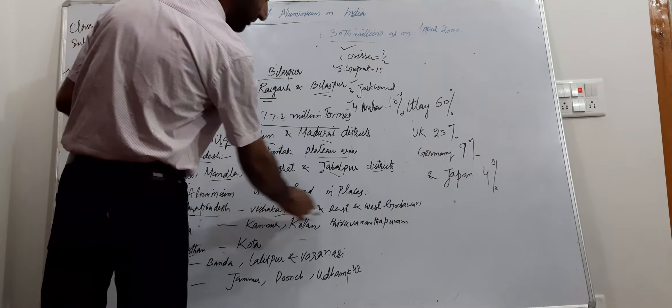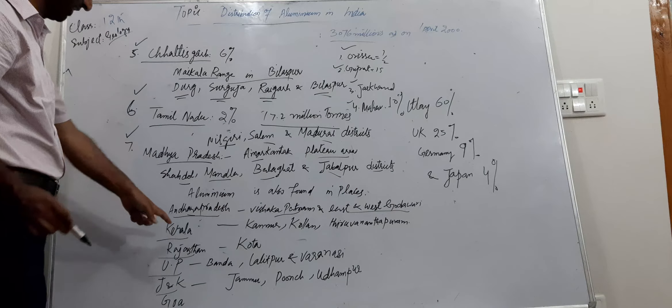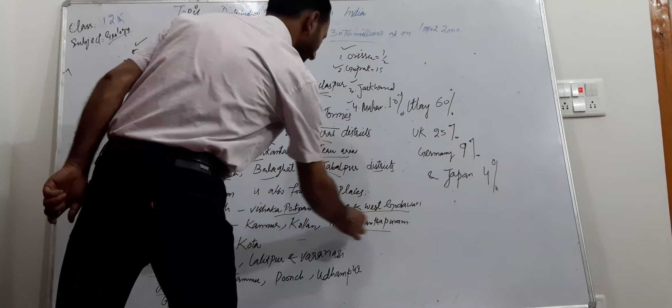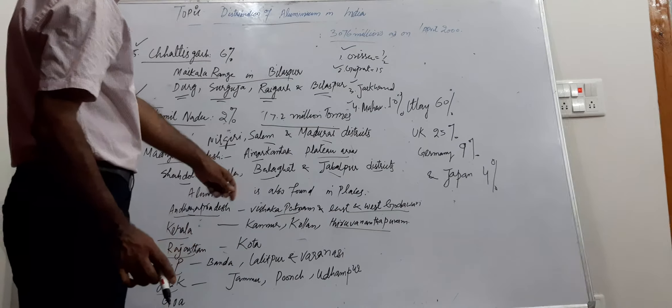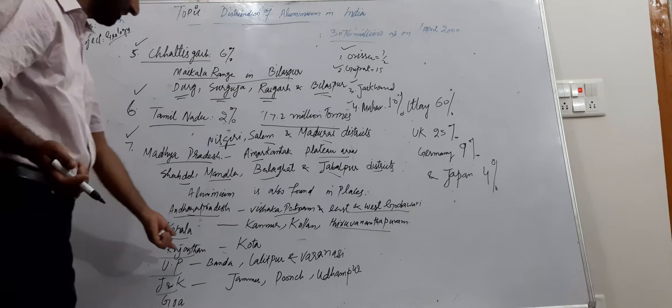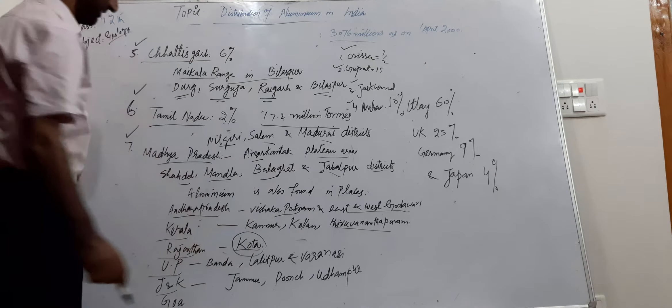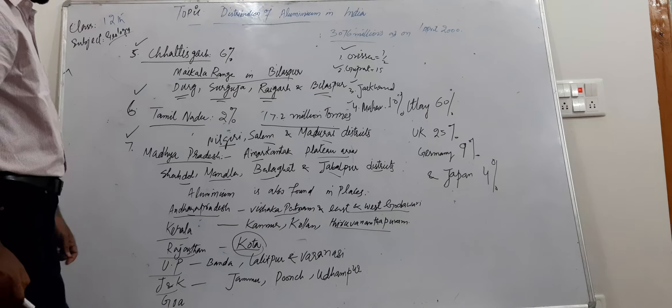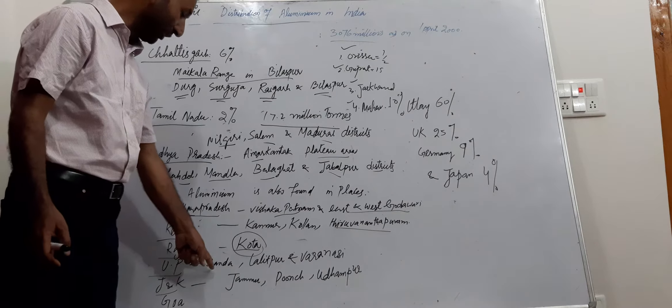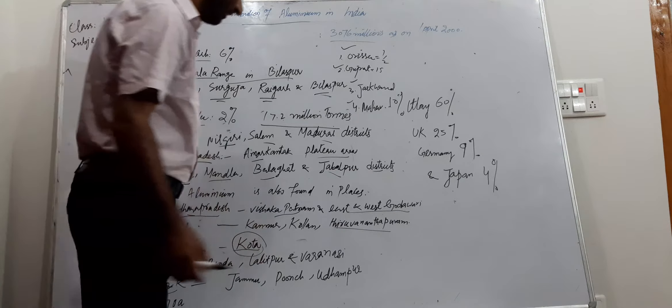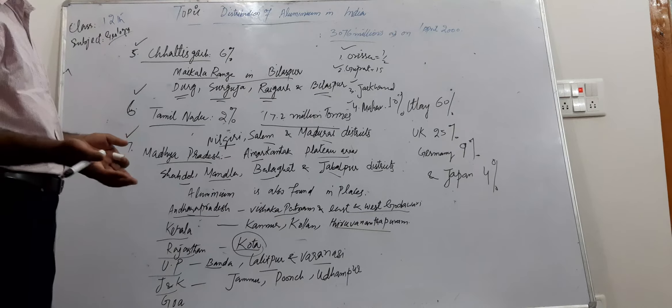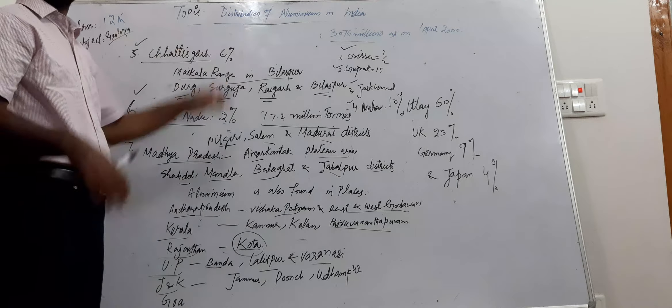Andhra Pradesh: Vishakhapatnam, East and West Godavari. Kerala: Kannur, Kollam, Trivandrum, these are the places in Kerala which contribute aluminum. Rajasthan has Kota district which provides us bauxite ore. In UP the places are Banda, Lalitpur, Varanasi, these are the places which contribute bauxite ore from which we extract aluminum.